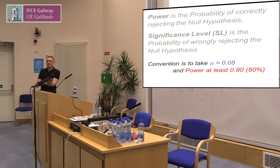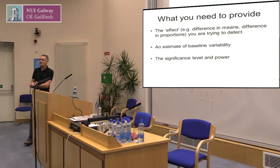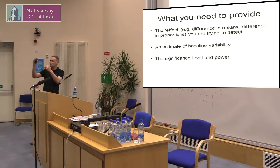Martin talked about the choice of power for non-inferiority and that tends to be more. So what do you need to provide? You're going to have this conversation with the statistician, and he or she is going to say: what are you trying to detect? What is the effect that you're trying to detect here? This should all have been thought out beforehand — I'm putting in a new intervention, I'm hoping to reduce or raise something by how much? So it's either the difference in means or the difference in proportions.